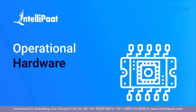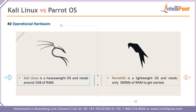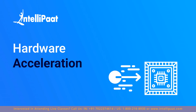The next comparison point is operational hardware. Kali Linux is a heavyweight OS, requiring around 1 gigabyte of RAM, while Parrot OS is lightweight and only needs 300 megabytes of RAM. That's over 700 to 800 megabytes of RAM saved, which can be put to use for other operations in the OS itself. So when comparing Kali and Parrot on this point, Parrot wins this round as well.